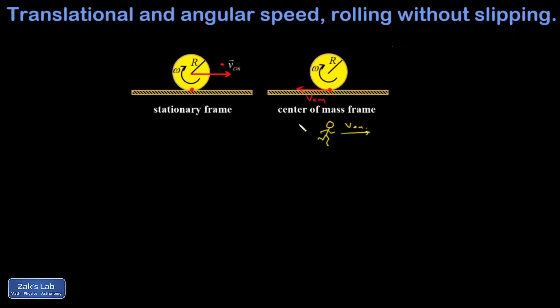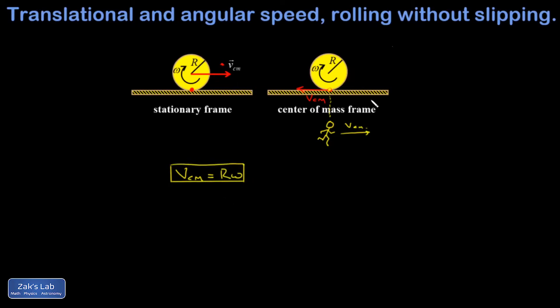The advantage of switching to this reference frame is that I now see pure rotation from my perspective, and I have a formula for pure rotation relating the speed at the edge of a disk to the radius and angular velocity. So it's as simple as this: the magnitude of v_cm equals r times omega. It's the simplest possible result — by switching into a new reference frame, we've shown that the center of mass velocity of a rolling object equals r times omega.